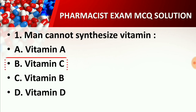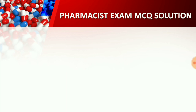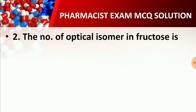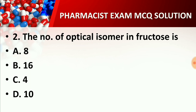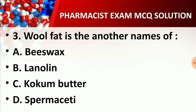Question number two: The number of optical isomers in fructose is — Option A: 8, Option B: (other options implied). The right answer is Option A: 8. Fructose contains a total of 8 optical isomers.